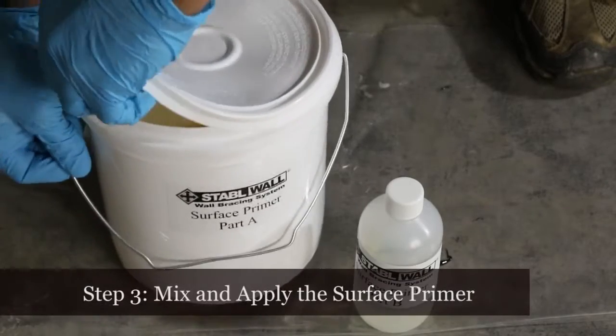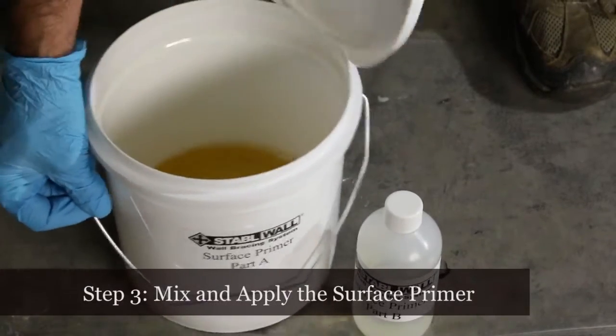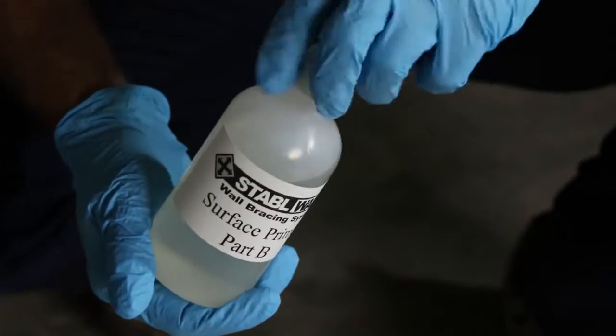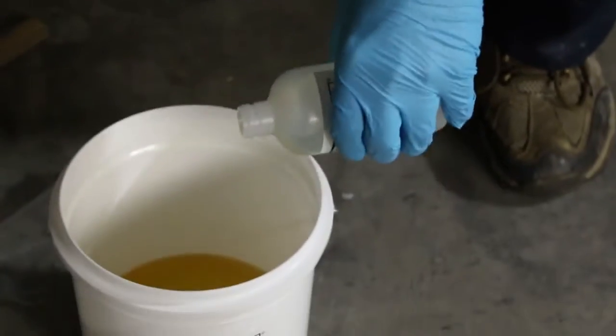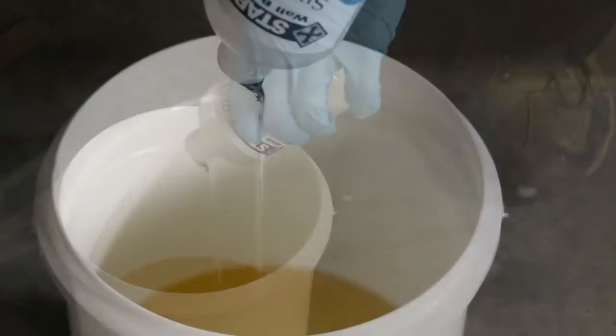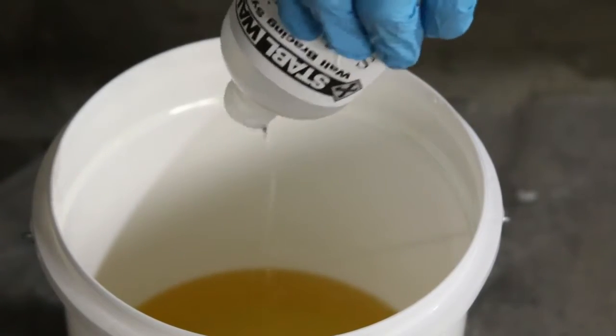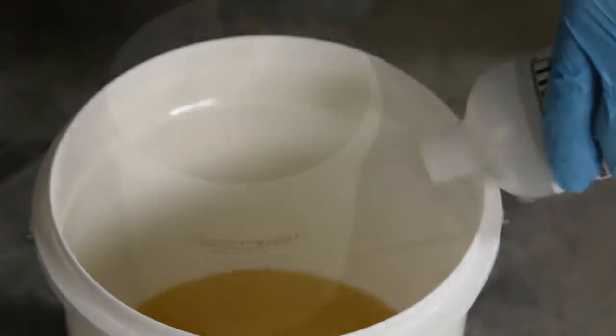Step three is to mix and apply the primer. All the StableWall adhesives are mixed in a 3 to 1 resin ratio and are supplied in that ratio. The buckets are big enough to mix right in them. Always mix all of B into bucket A. Mix the materials for about 5 minutes with a stirrer until thoroughly mixed.